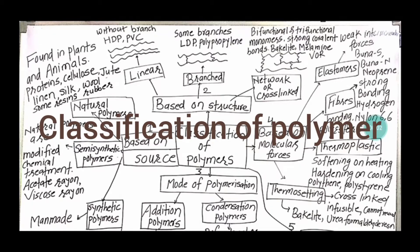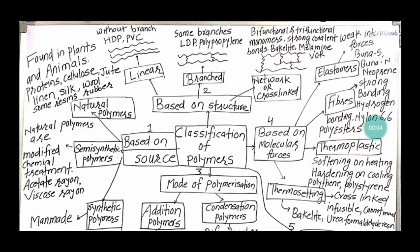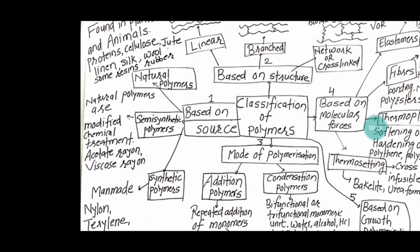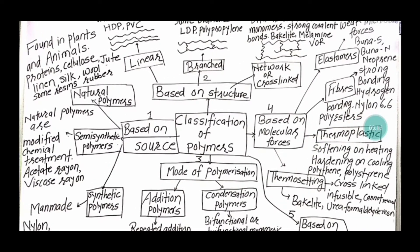Hello my friends, welcome to this YouTube channel. Today our topic is classification of polymers. The first way to classify polymers is based on its source. We have natural polymers, they are found in plants and animals.